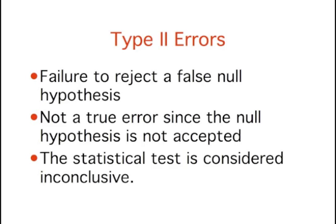The second type of error that can be made in significance testing is failing to reject a false null hypothesis. This kind of error is called a Type II error.